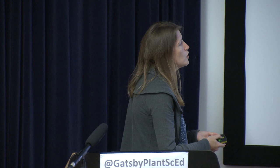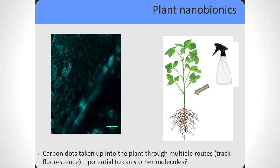We made some carbon dots, confirmed they were fluorescent, and put them into plants. We found that the carbon dots are taken up by the plant and can be imaged under a confocal or fluorescent microscope — the beautiful blue shown here is the fluorescence of carbon dots. You can water them on, spray them on, or use hydroponics, and the carbon dots are taken up through multiple routes, which you can confirm by tracking the fluorescence. And we found that it did enhance photosynthesis, which is wonderful. This also raised the question: can you use this to carry other molecules?